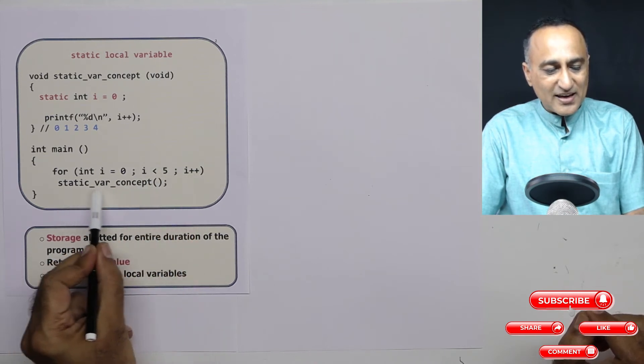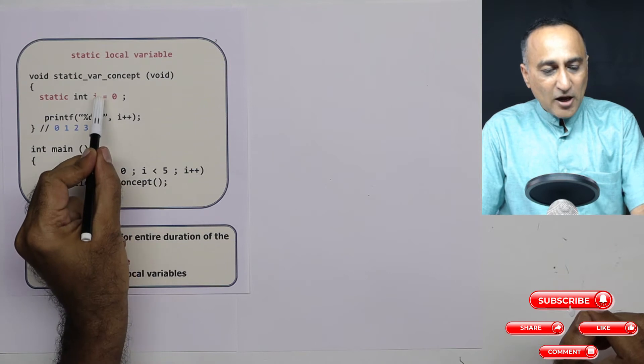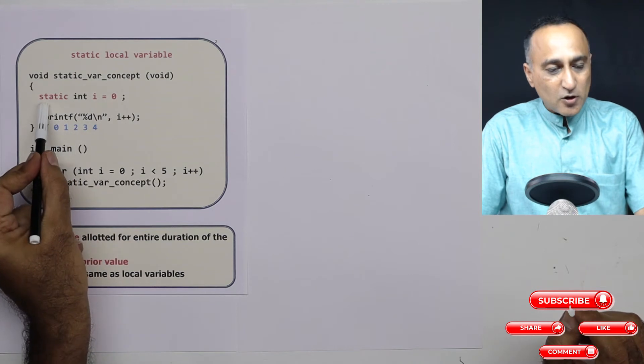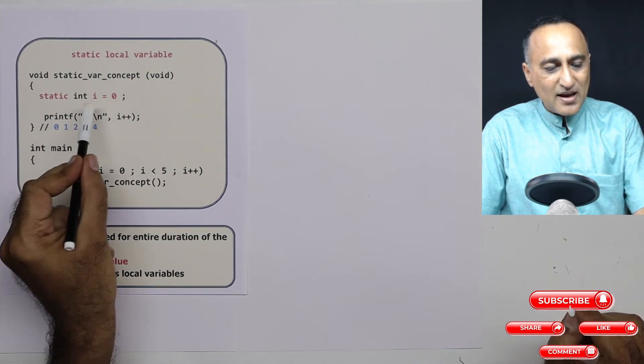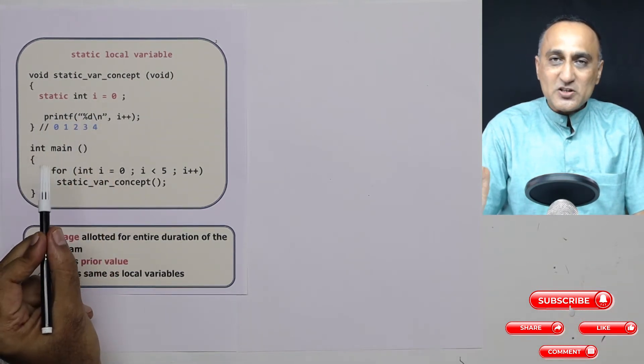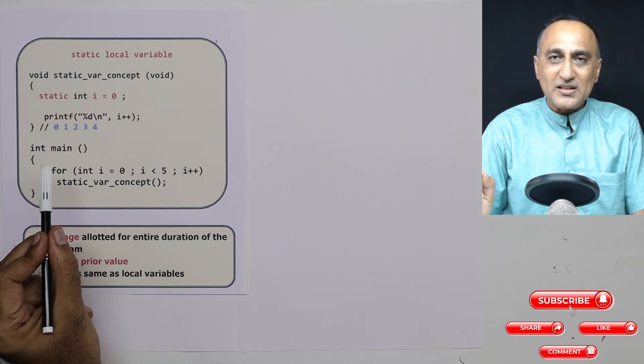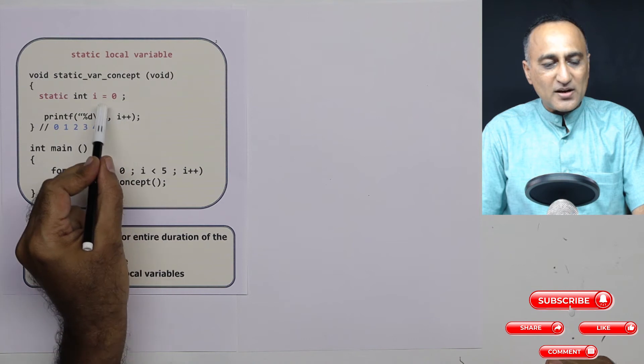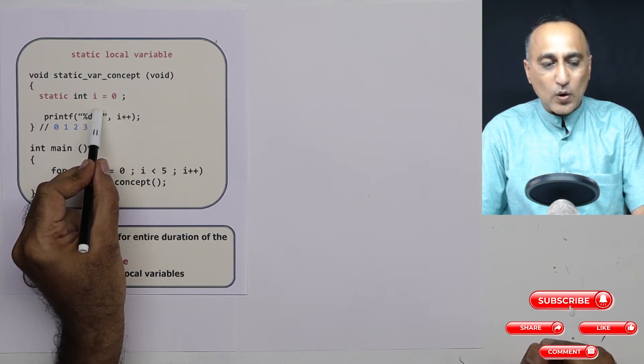Now what happens is this i value will not get reinitialized back to zero. Because of this static keyword, i will retain its previous value, what it was during the last function call. Since during the last function call zero became one, the new current value of i is going to be one. Since it is one, now it is going to print one here, and this i here is going to become two.